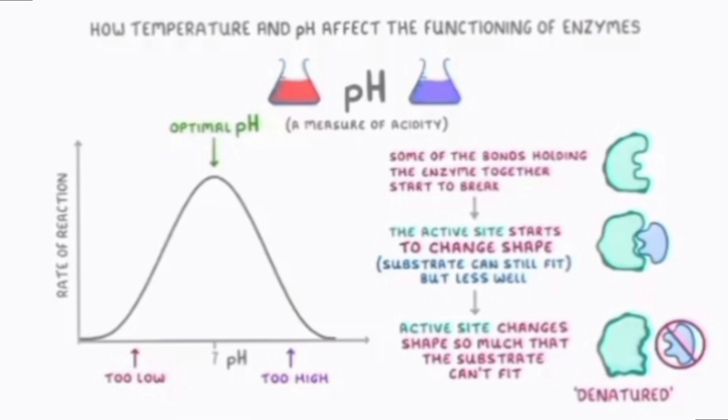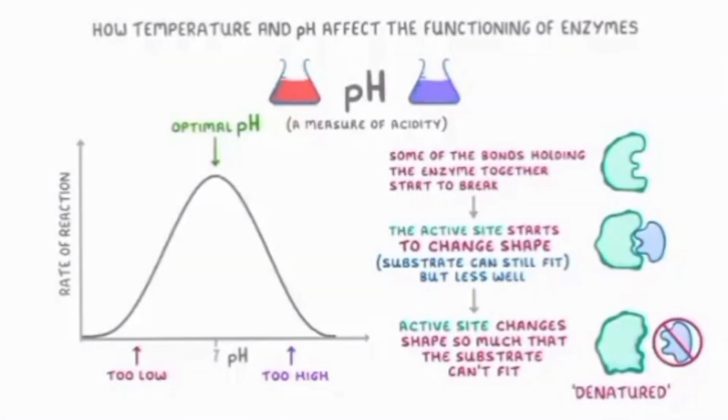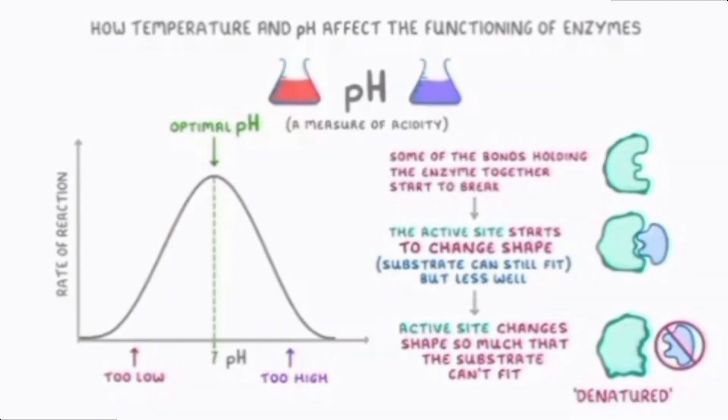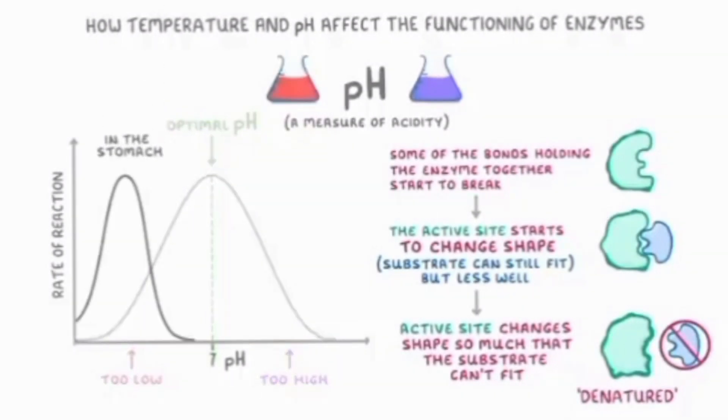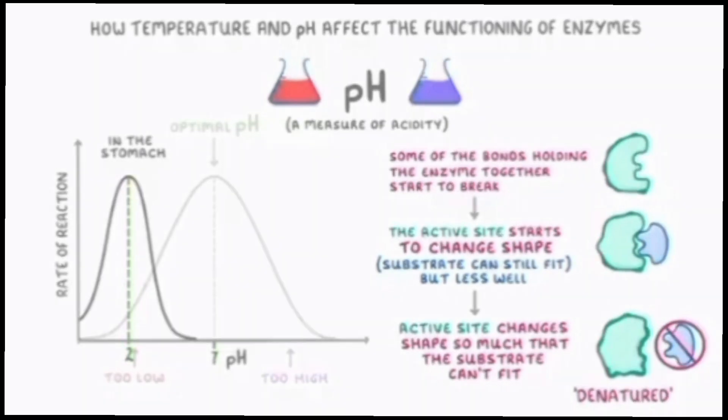The optimum pH of any enzyme depends on its working site, that means which part of the body it acts in. For example, most enzymes in our body perform best around neutral pH, that is pH 6 to 7, as you can see in this graph. But enzymes that work in our stomach have an optimum pH around 2, because they function in the stomach's acidic environment. As we take pH outside the optimum range, whether lower or higher, it will slow down enzyme activity.